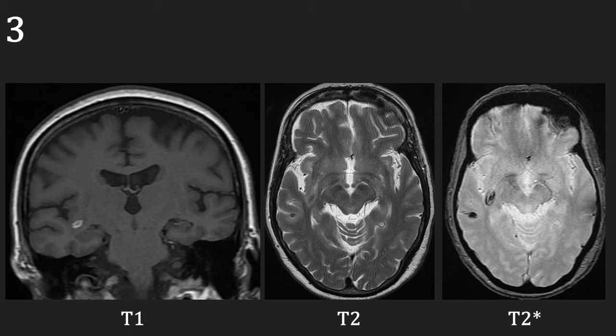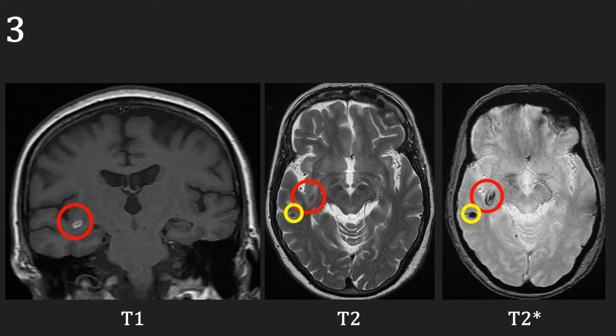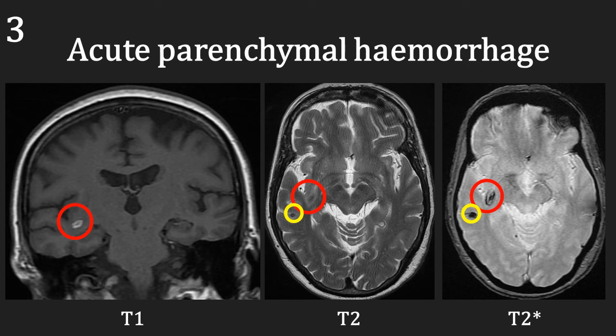This is a 75-year-old female patient who has been thrombolyzed for a stroke and was not improving, so an MRI was requested for further evaluation. On the coronal T1, we can see an area of high signal adjacent to the right sylvian fissure in the white matter. This is matched by an area of low signal on the axial T2 and also low signal on the T2 star. Furthermore, posterior lateral to this, in the right temporal lobe, there is another area of low signal abnormality on both the T2 and T2 star. This represents an acute parenchymal haemorrhage.